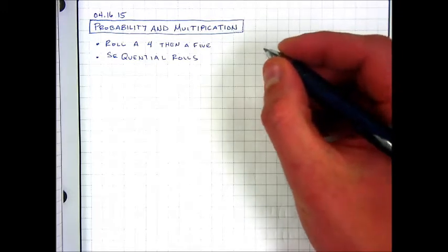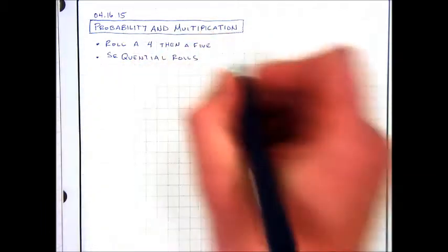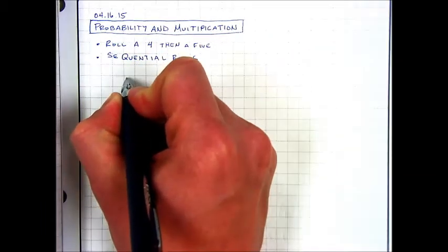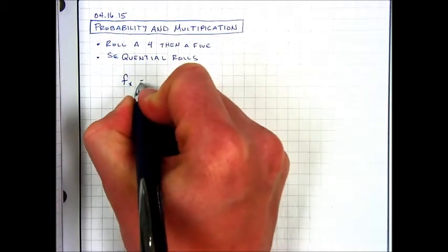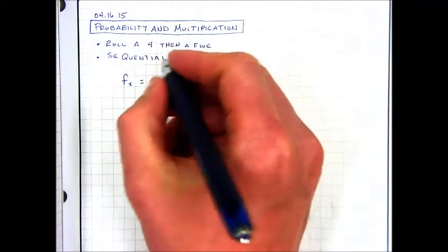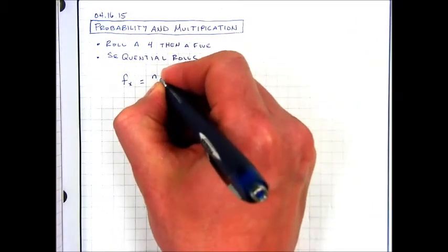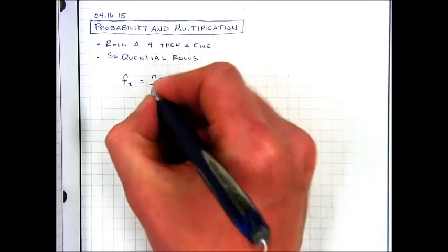We can do this using the frequency formula. The relative frequency of outcome X happening is equal to the number of events with outcome X divided by the total number of events.